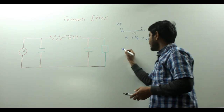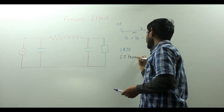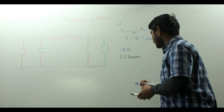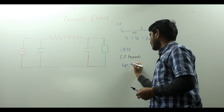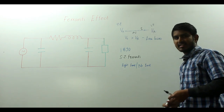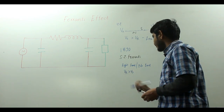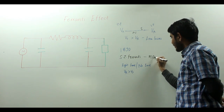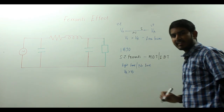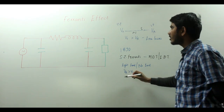But in the year 1890, Sir S.Z. Ferranti came with an astonishing and surprising theory suggesting that in case of light loading or no load at the receiving end, in medium distance and long distance transmission lines, you witness the receiving end voltage to be greater than the sending end voltage — a phenomenon known as the Ferranti effect.